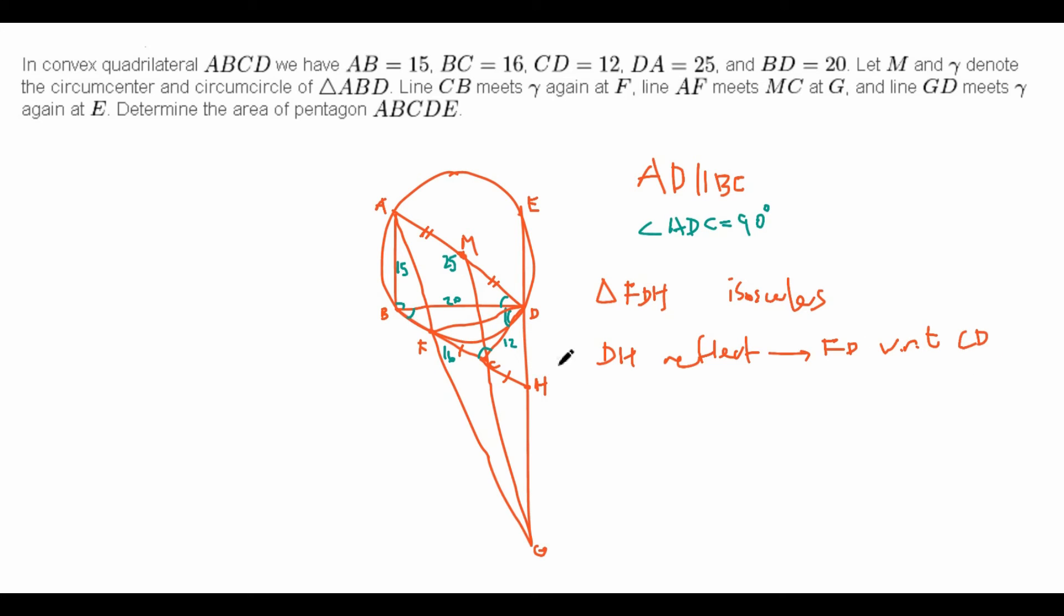So, DH reflects to FD with respect to CD. Now, why is this good? Well, first off, we see that the reflection of DH about the line CD is just the same thing as a reflection of DH about MD, because MD is perpendicular to CD, so the reflection of a line will be the same in either line.